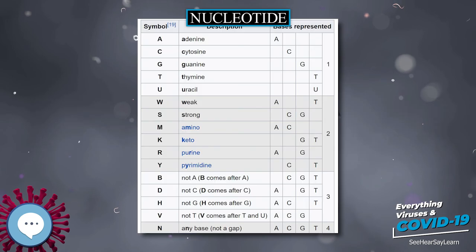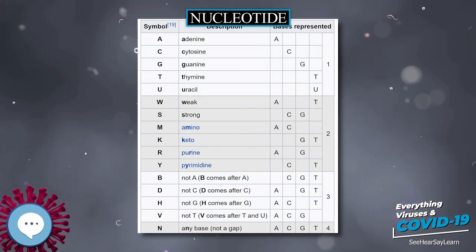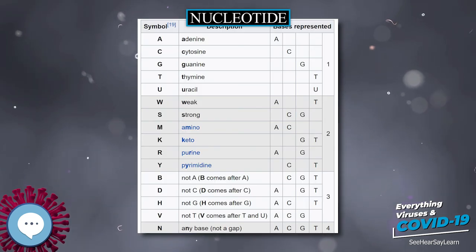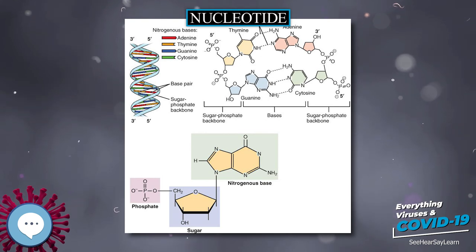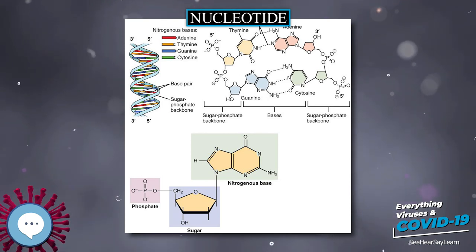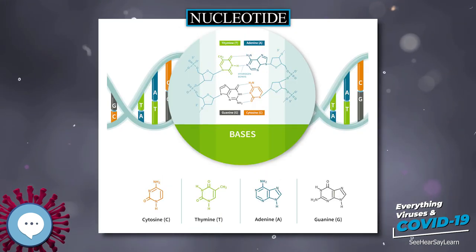Nucleotide, abbreviated 'nt', is a common unit of length for single-stranded nucleic acids, similar to how 'base pair' is a unit of length for double-stranded nucleic acids.